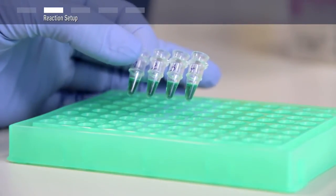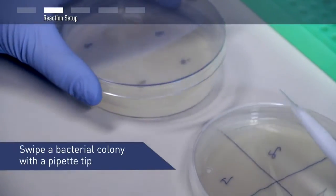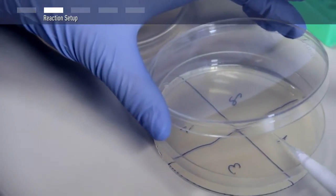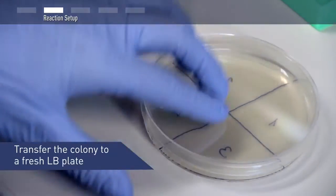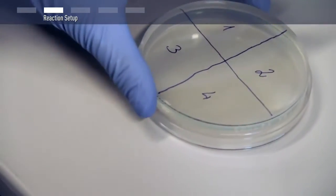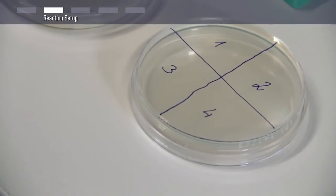To perform Colony PCR, swipe a well-isolated bacterial colony with a sterile pipette tip. To make a replicate of the colony, transfer it to a fresh LB plate with the tip. Make sure to properly label the LB plate so that the position of each colony can be easily identified.